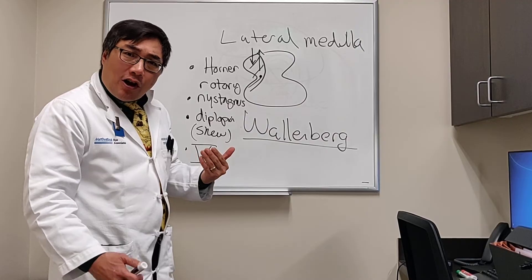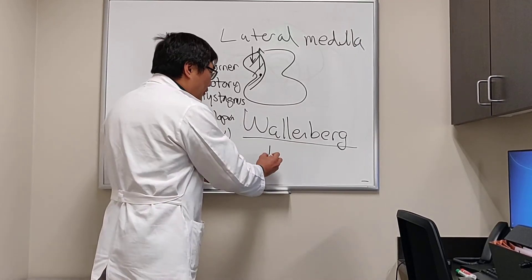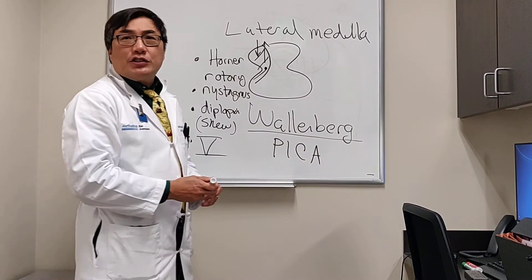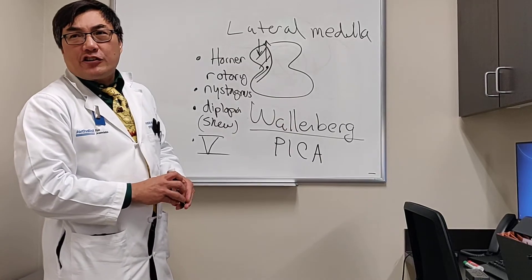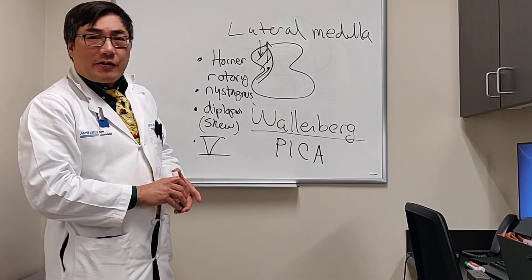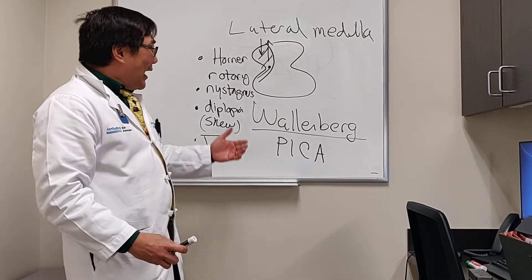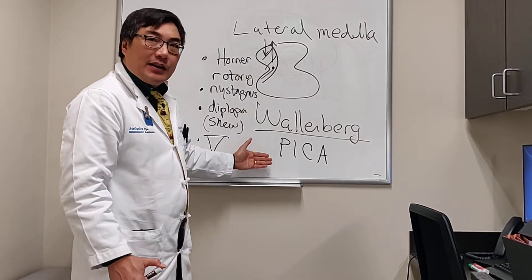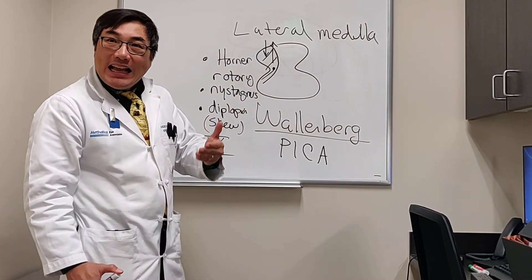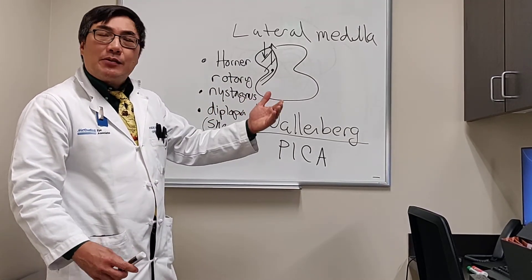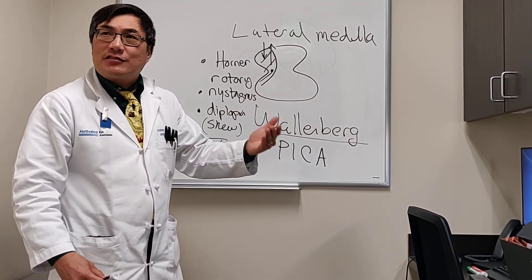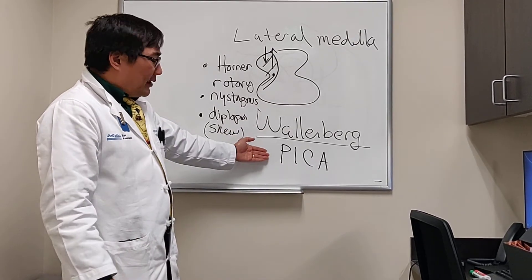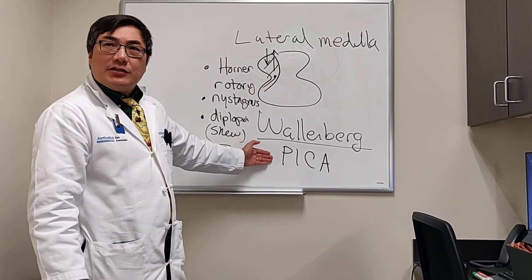The most common cause of Wallenberg syndrome is an infarct from its blood supply — the posterior inferior cerebellar artery, PICA. So when we have an acute Wallenberg syndrome, we should be looking for a PICA occlusion, which can be from vertebral disease, basilar disease, or cardioembolic disease — something that has occluded the PICA.